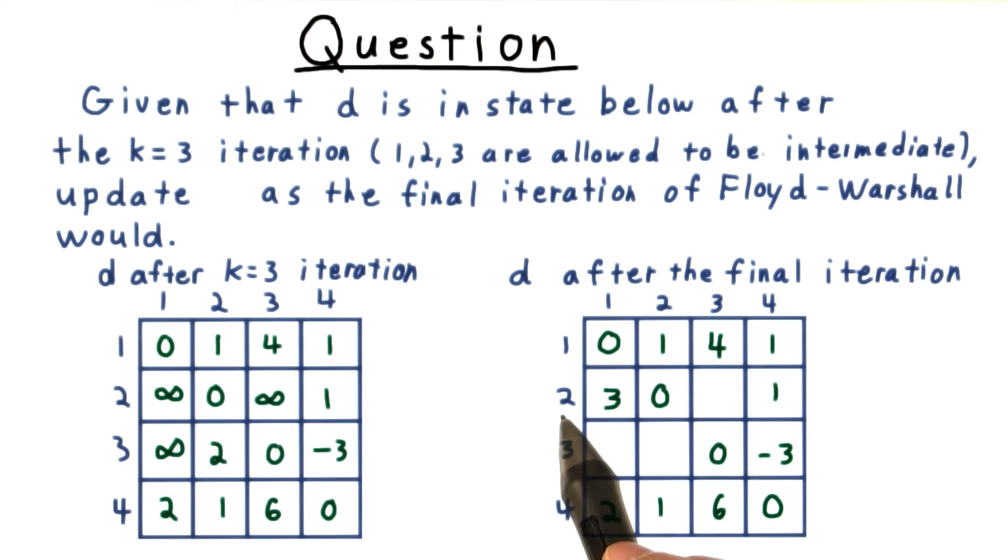That's good. Going from 2 to 3 was impossible before, but using vertex 4, I can go 2 to 4 for a cost of 1, and then 4 to 3 for a cost of 6 more, for a total of 7.